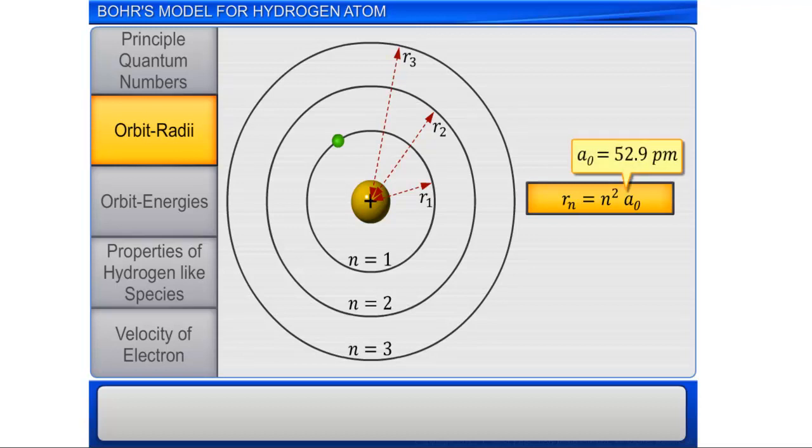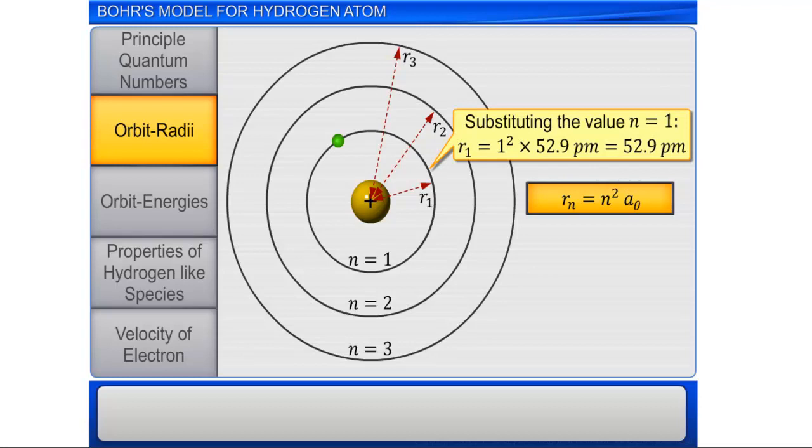This means that the smallest possible value of R, or the radius of the very first orbit, where the sole electron of the hydrogen atom found in its ground state is equal to 52.9 picometer. This radius is called Bohr's radius.